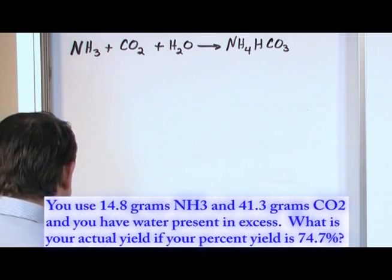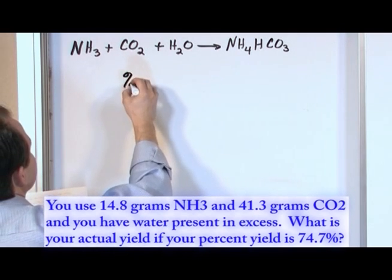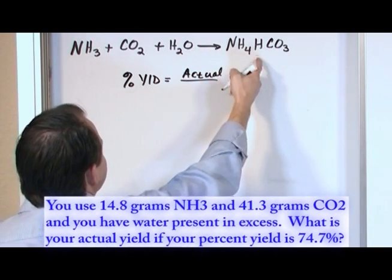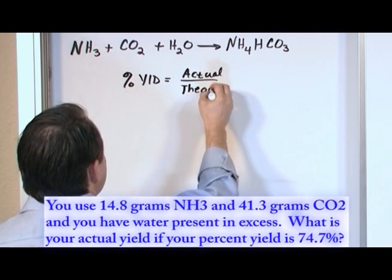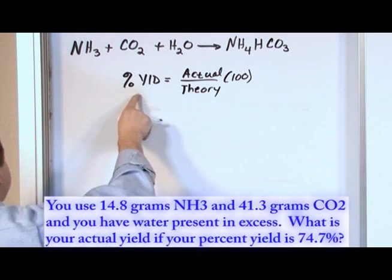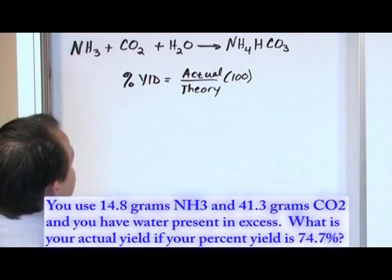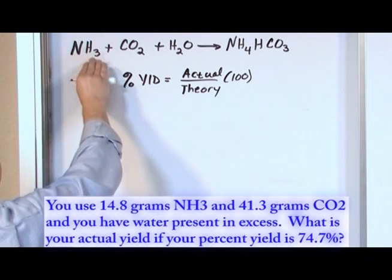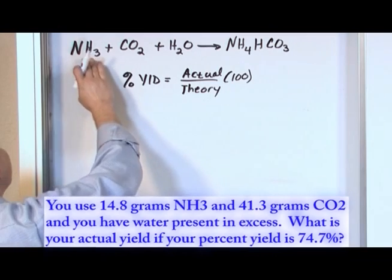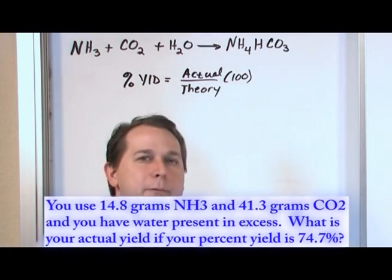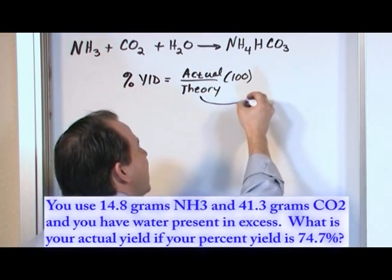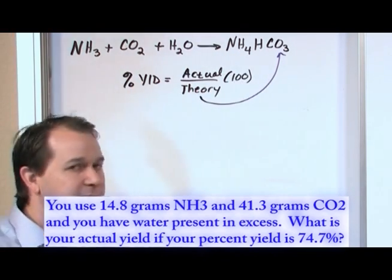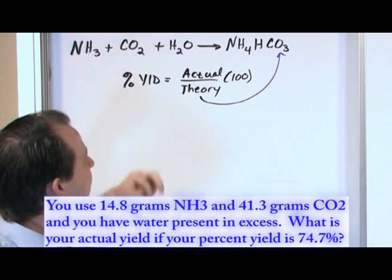If we think about the percent yield, it's equal to the actual amount we produce divided by the theoretical amount we calculate, times 100. The problem tells us the percent yield is 74.7, and it also tells us how much of each reactant we have. So from this, knowing about limiting reactants, we can figure out which one is the limiting reactant and how much product is theoretically produced. Then we can calculate the actual yield.